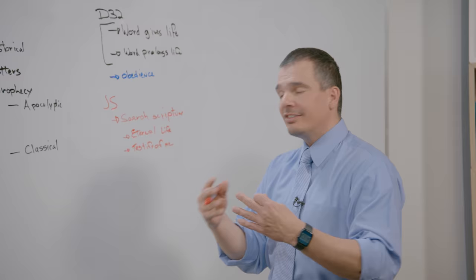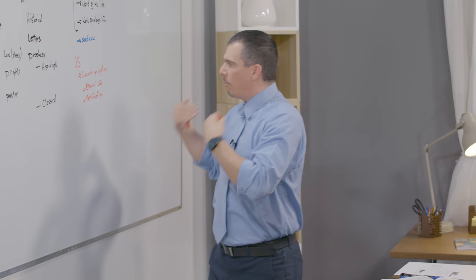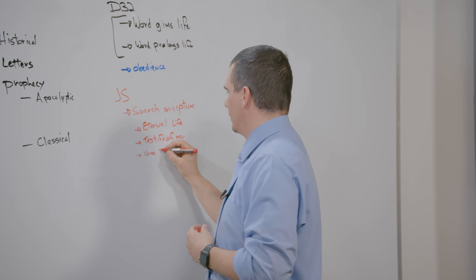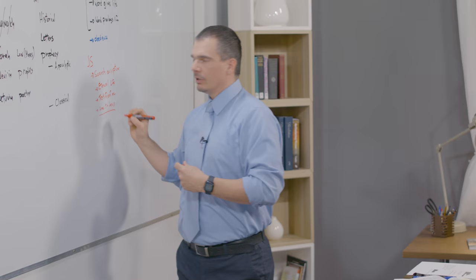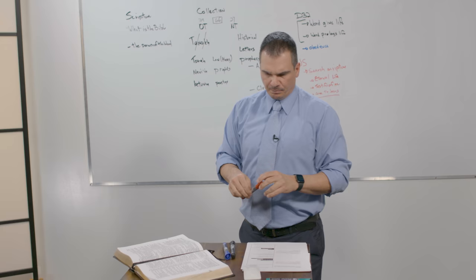Jesus does not rebuke them for thinking that eternal life is in the Scripture, but then he tells them, but it is they that testify of me. So we see a clear connection between the Scripture and Jesus. And he goes on saying in the next verse, and ye will not come to me that you might have life.